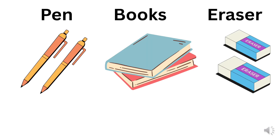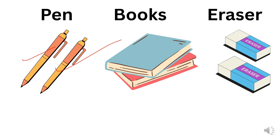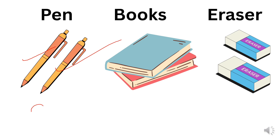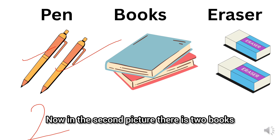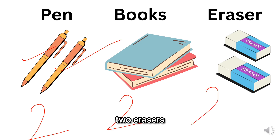Now, look at the picture. What you can see is there is one pan and there is another pan. How many pans are there? Two pans. In the second picture, there are two books and we also have two erasers.